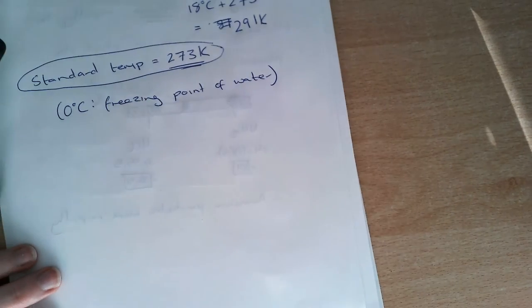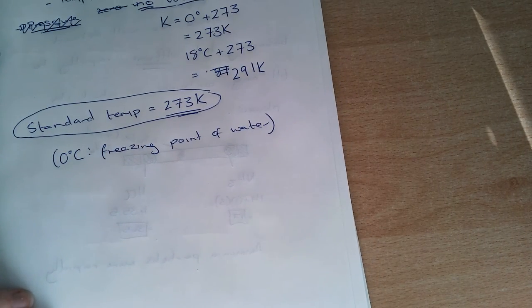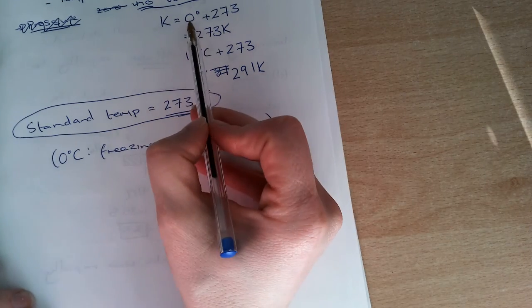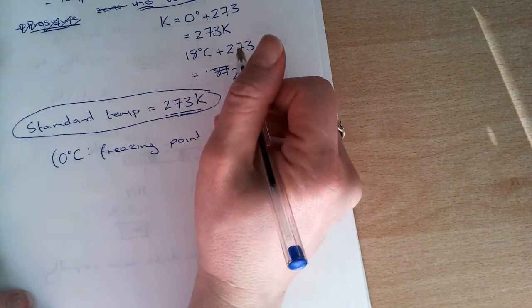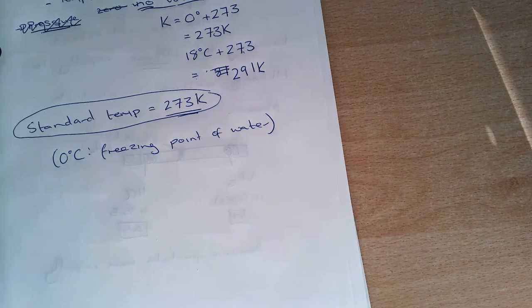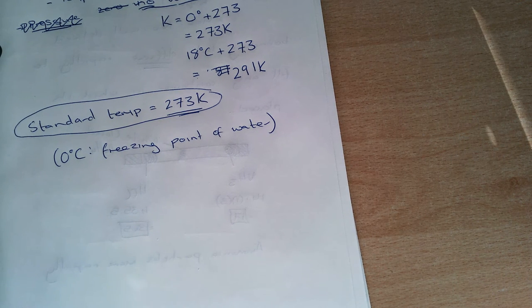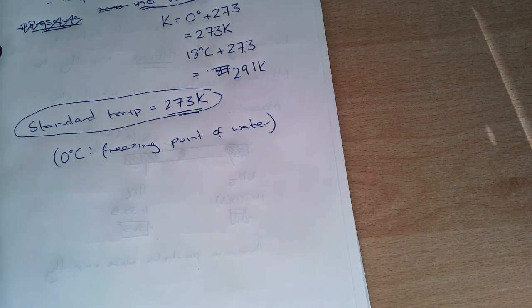If you're given your question in degrees Celsius, you have to add on 273 in order to calculate, because we use Kelvin here instead of degrees Celsius.